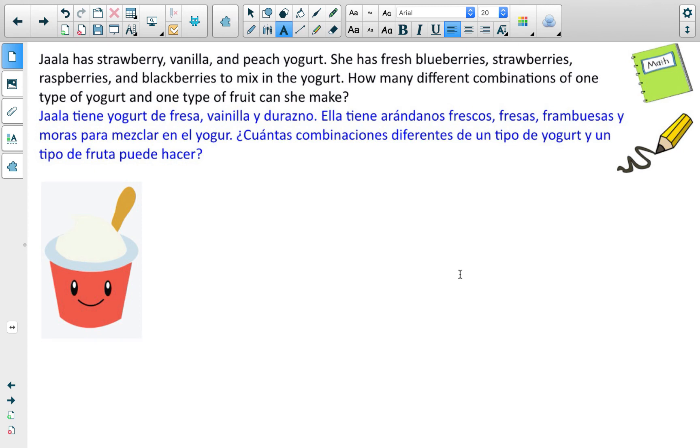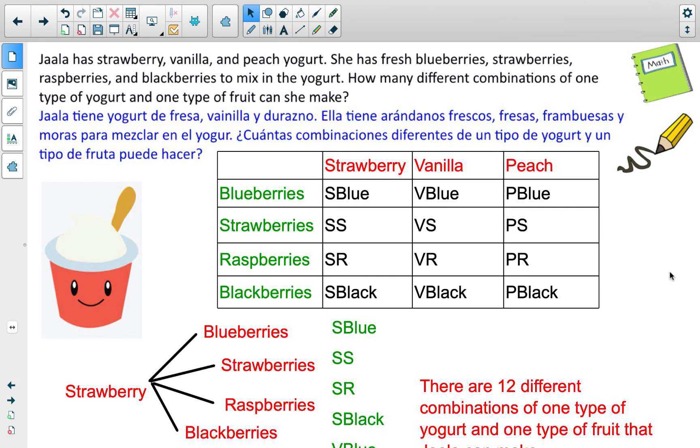We got one more example here. I want you guys to try this, read through it, and check the video when you're done. The answer to this example problem is 12 combinations. This one doesn't ask specifically for the sample space, although you would kind of need to figure it out to calculate how many total, but it's just asking the total number of combinations.